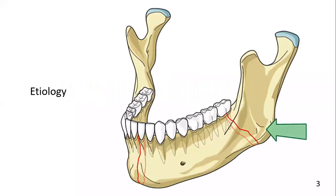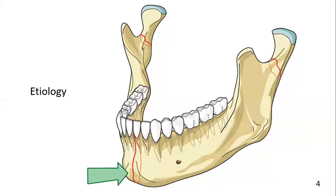The cause of the mandibular fracture is essential because it may indicate fracture type and severity. A blow to the mandibular angle will likely cause a fracture of that angle and potentially a contralateral fracture of the body or symphysis. Similarly, impact on the chin would lead one to suspect a fracture in the symphysis area, a condylar fracture, or both.